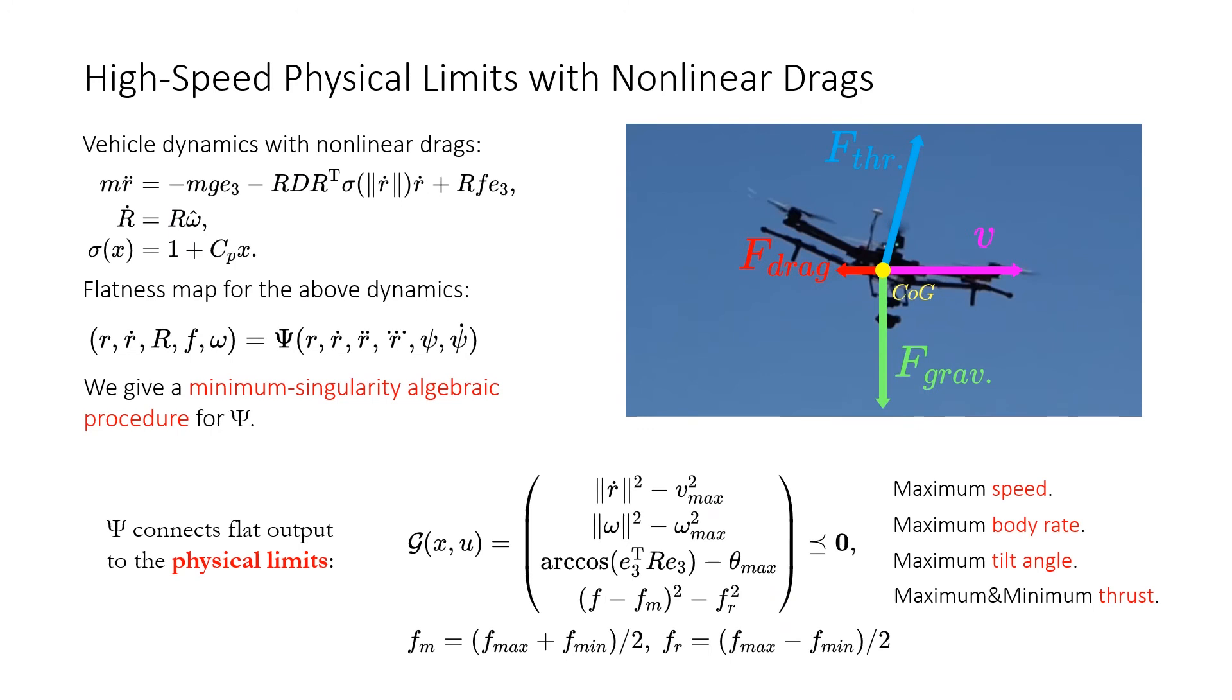We give the minimum singularity flatness of our drones with non-linear drag effects. Physical limits are enforced via the flatness map and penalty functionals. Consequently, the drones are less likely to produce large tracking errors due to actuator limits when flying at high speed.